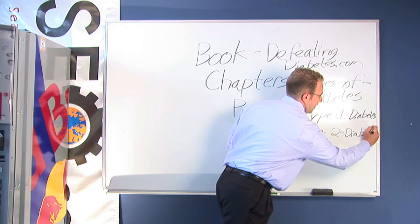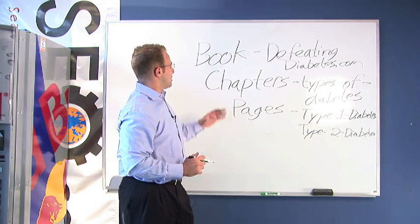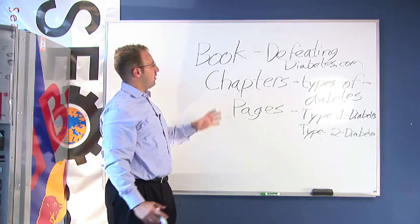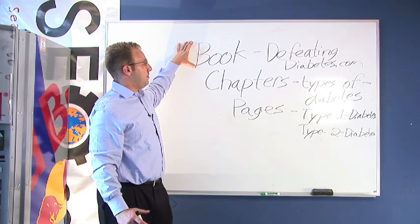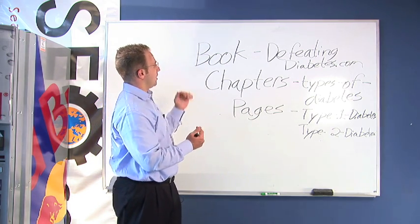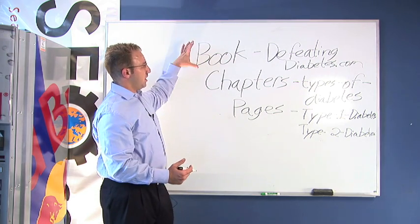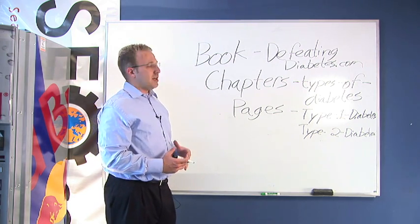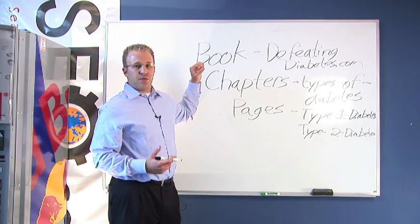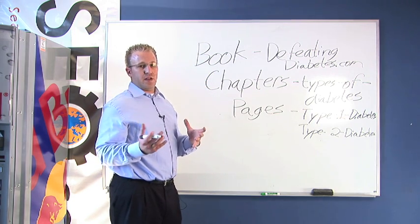Now when assigning keywords to each of these individual pages, I'm going to first talk about the book — the overall diabetes topic itself. So the title of your book could have, for example, keywords like: information about diabetes, types of diabetes, symptoms of diabetes, treatment of diabetes — different things that you're going to find throughout the website.